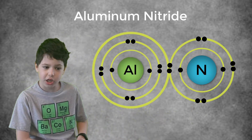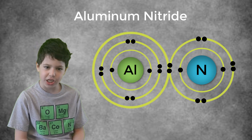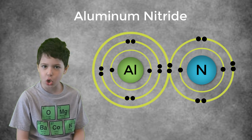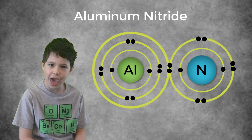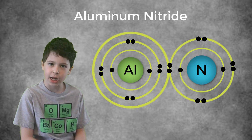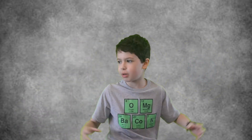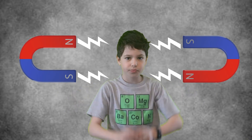An ionic bond is the electrostatic attraction of oppositely charged ions. Ionic compounds are held by an ionic bond, much like opposite poles of a magnet attract each other.